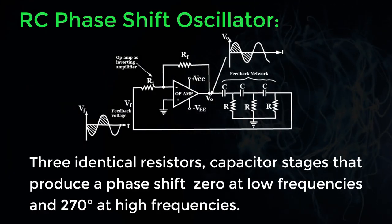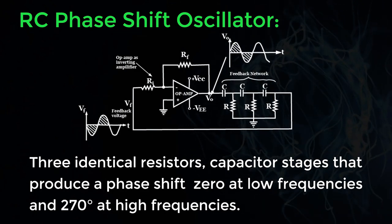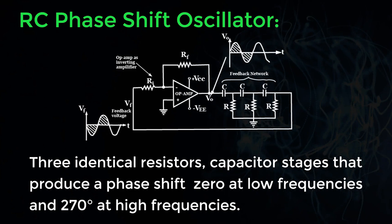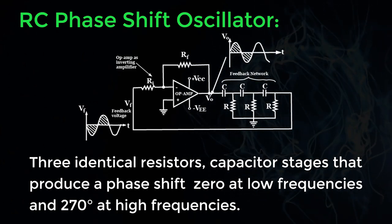The most common phase shift network cascades three identical resistor-capacitor stages that produce a phase shift of zero at low frequencies and 270 degrees at high frequencies.